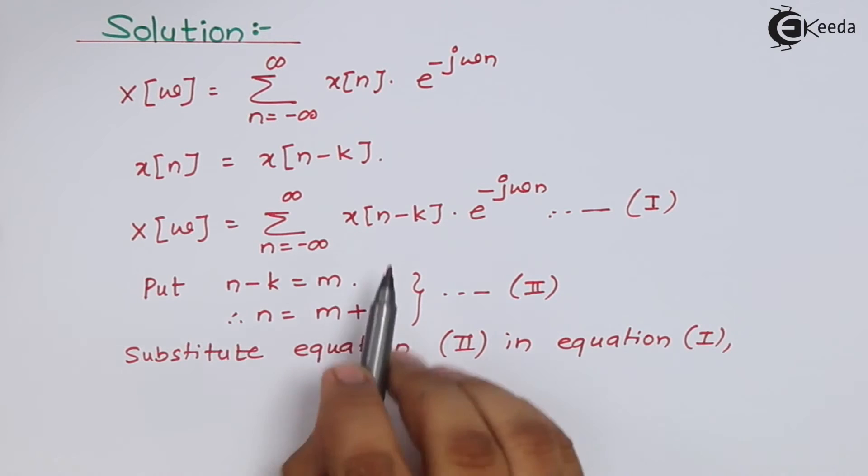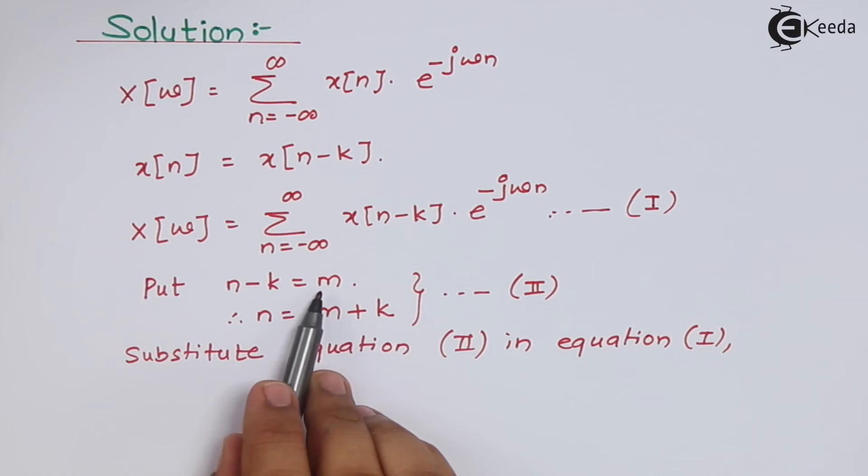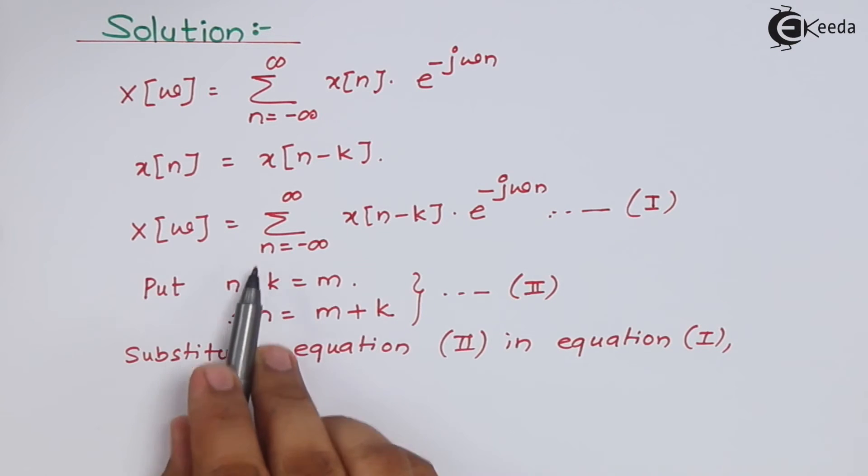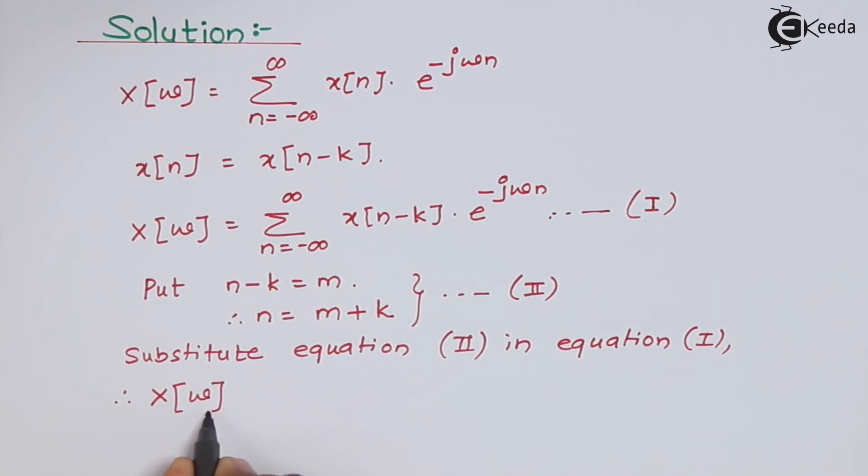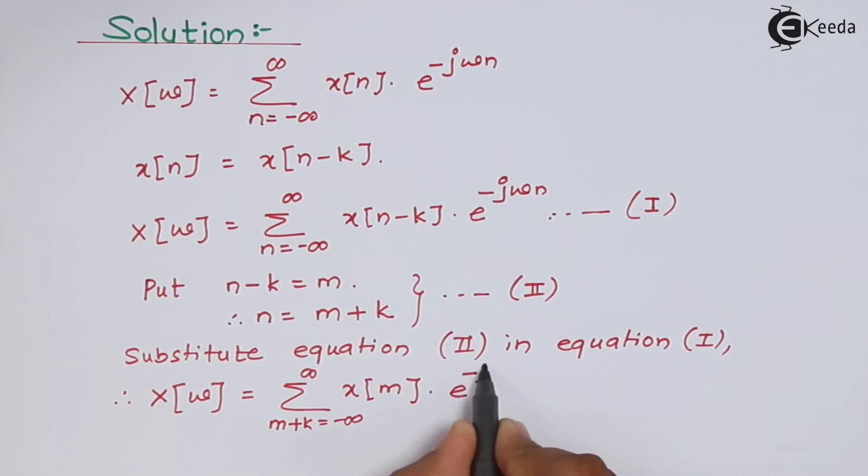So what we will get? This n-k is replaced by m and this n is replaced by m+k, as well as this n is also replaced by m+k.